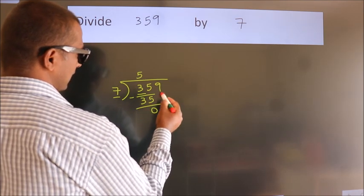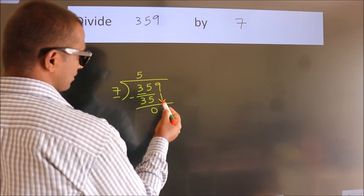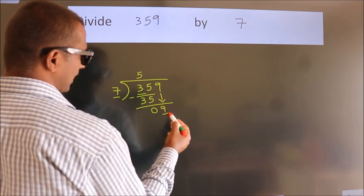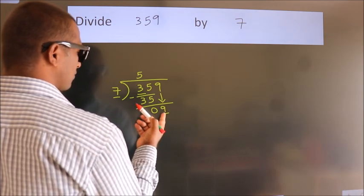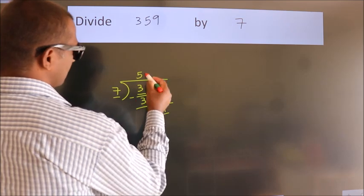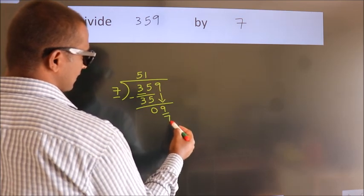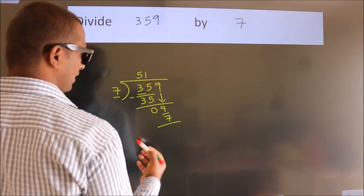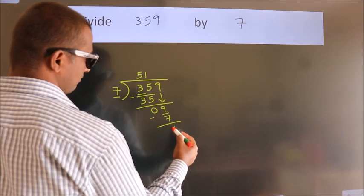After this, bring down the beside number. So 9 down. A number close to 9 in the 7 table is 7 once, 7. Now we subtract. We get 2.